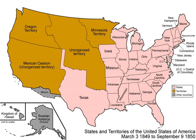Texas surrendered its claim to New Mexico as well as its claims north of 36 degrees 30. It retained the Texas panhandle, and the federal government took over the state's public debt. California was admitted as a free state with its current boundaries. The South prevented adoption of the Wilmot Proviso, which would have outlawed slavery in the new territories.